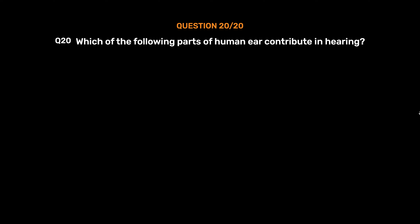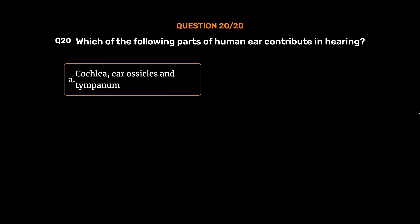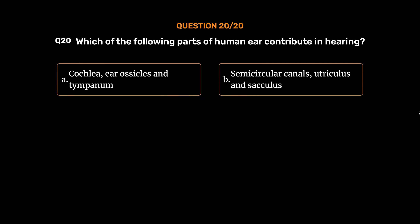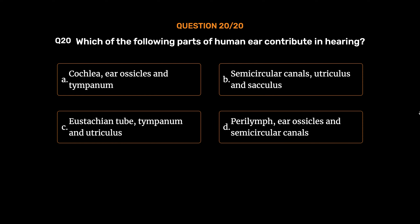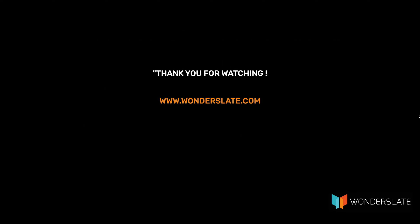Question number 20. Which of the following parts of the human ear contribute in hearing? Option A: Cochlea, ear ossicles and tympanum. Option B: Semicircular canals, utriculus and sacculus. Option C: Eustachian tube, tympanum and utriculus. Option D: Perilymph, ear ossicles and semicircular canals. The correct answer is Option A: Cochlea, ear ossicles and tympanum. Thank you for watching the video.